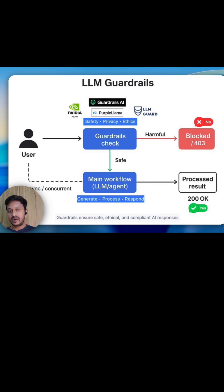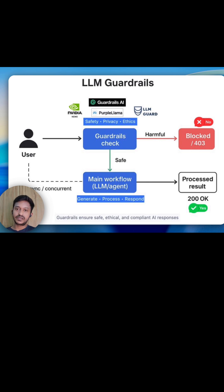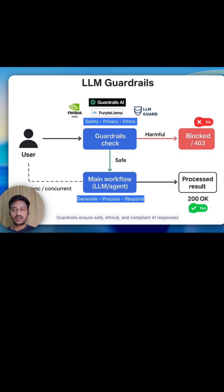This is why we need guardrails in place while building efficient AI applications. Nowadays they are not optional but essential for any production-grade AI applications. These are some simple scenarios, but there are many bigger scenarios where attackers can easily hack your AI or agentic applications and try to mine the personal information of your users. LLM guardrails play a vital role and are very critical.